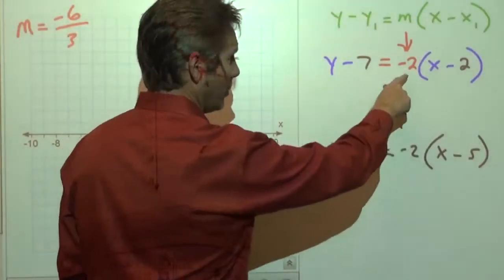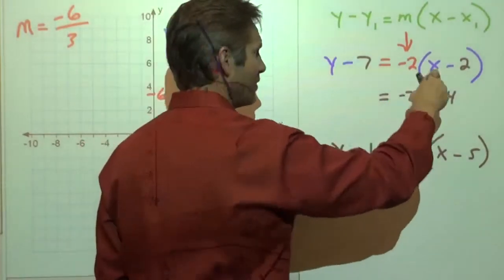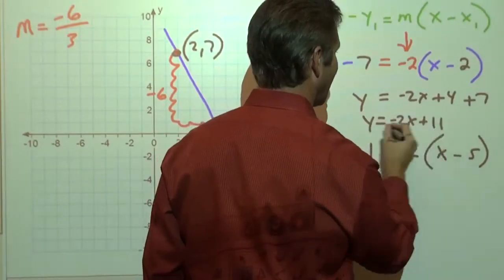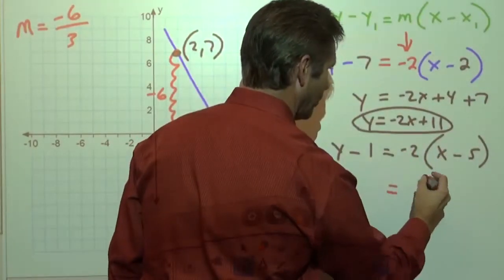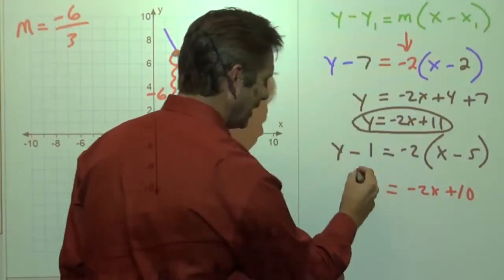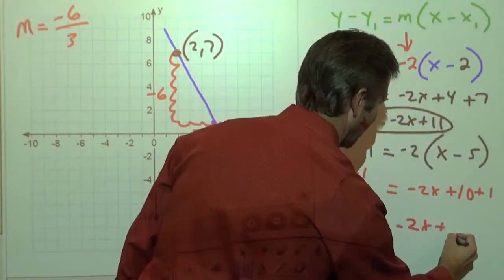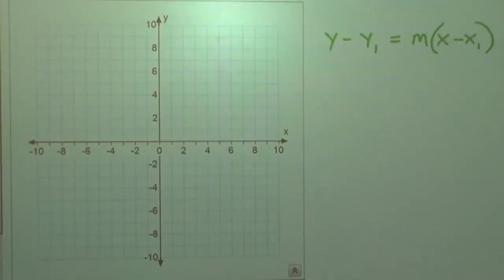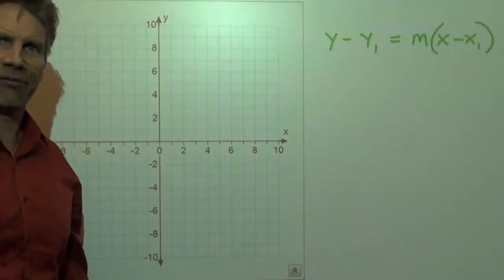Well, you bet. If you were to distribute the negative 2 here, you would get negative 2x plus 4. Add the 7 to this side, you get plus 7. Your final equation would be y equals negative 2x plus 11. That would be that equation right there. How about this guy? Distribute the negative 2, we get negative 2x plus 10. Then if we add 1 to both sides, we're going to end up with y equals negative 2x plus 11. They give us the same line if we put it in slope-intercept form. So we see that the point-slope form will work. Hey, I'd like to know where this comes from. Where does that point-slope form come from?